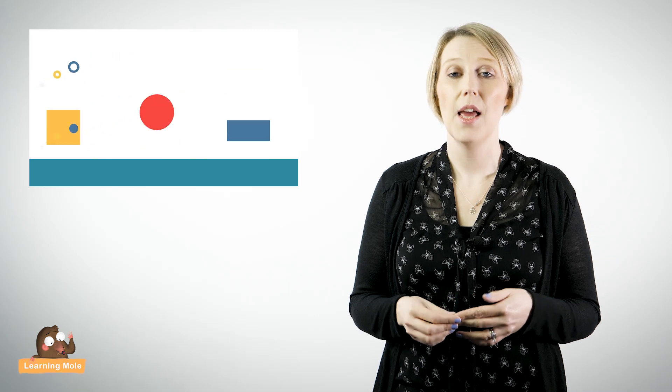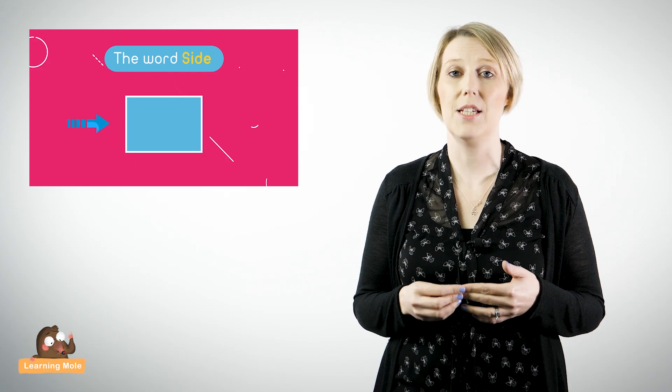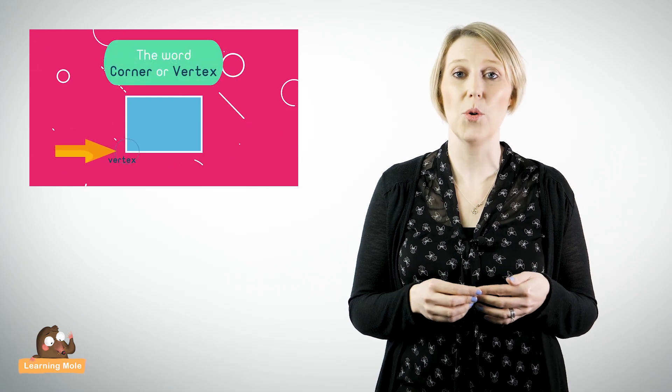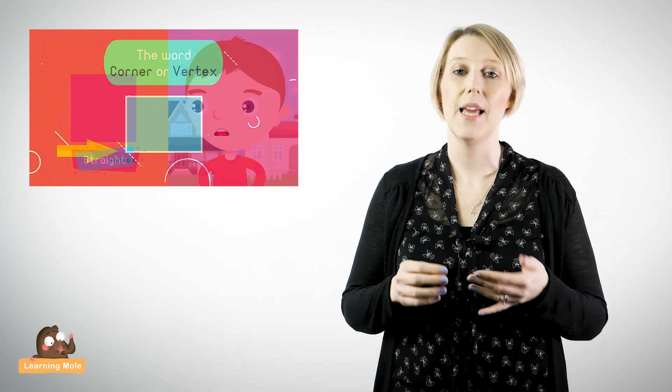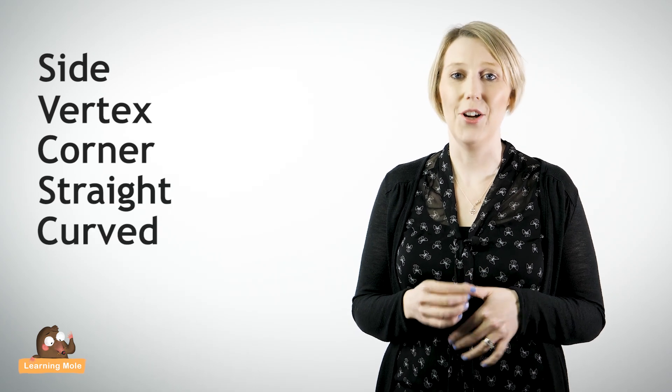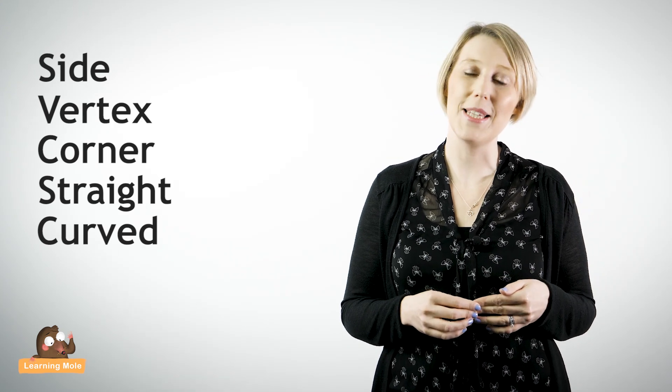Let's recap on what you've learned today about 2D shapes. A 2D shape is what we call a flat shape. We use the term sides to describe how many lines are used to make a shape. We use the term vertex or corner to describe the point where two sides meet. Sides can be straight or curved. Here are some useful words to help you think about 2D shapes: side, vertex, corner, straight, and curved. I really hope you enjoyed exploring shape world with us. Can you remember how many sides a pentagon has?